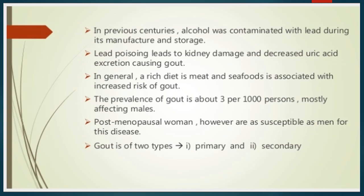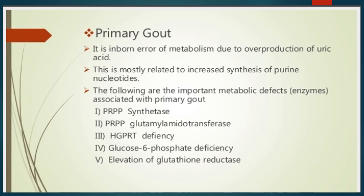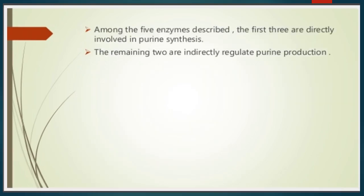Gout is of two types: primary and secondary. Primary gout is an inborn error of metabolism due to overproduction of uric acid, mostly related to increased synthesis of purine nucleotides. It is caused by defects in enzymes such as PRPP synthetase, PRPP glutamyl amidotransferase, HGPRT deficiency, glucose-6-phosphate deficiency, and elevation of glutathione reductase. Among these five, the first three are directly involved in purine synthesis, and the remaining two indirectly regulate purine production.